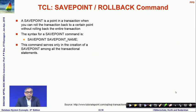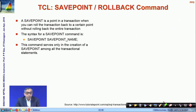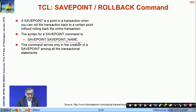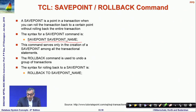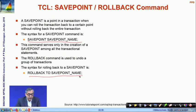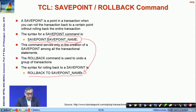Transactions can be long, so you may want to mark certain points within the transaction to rollback to if needed. These points are called savepoints. You declare them with 'SAVEPOINT name' and later use 'ROLLBACK TO savepoint_name' to undo changes only back to that specific point rather than rolling back the entire transaction.